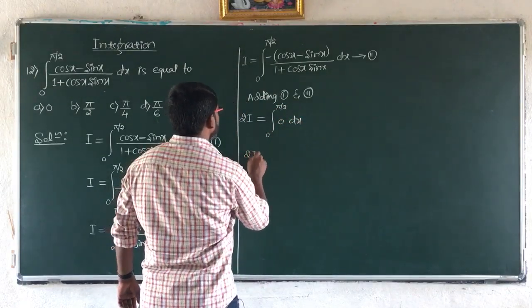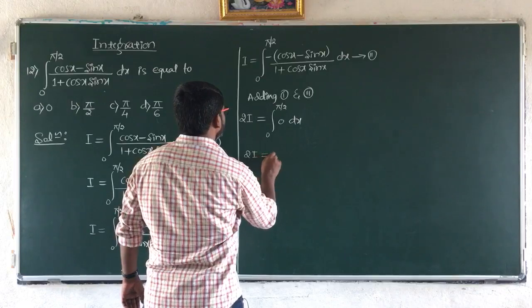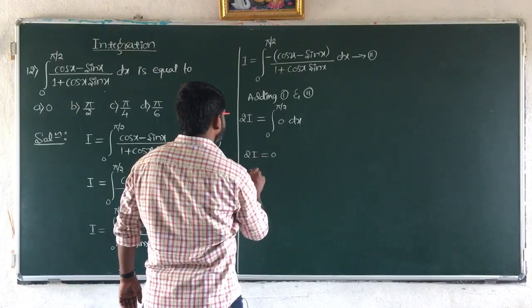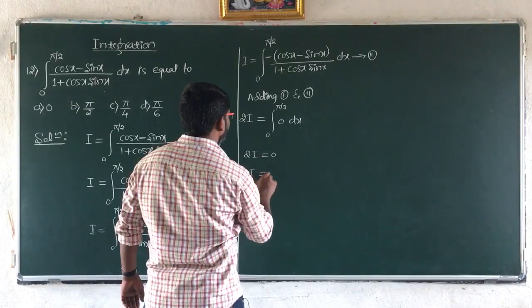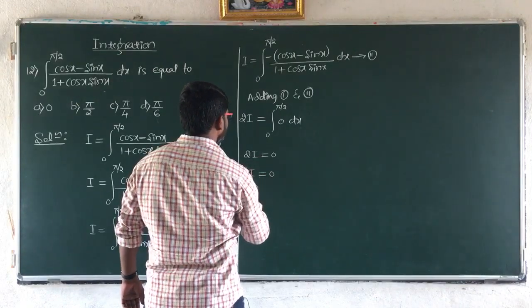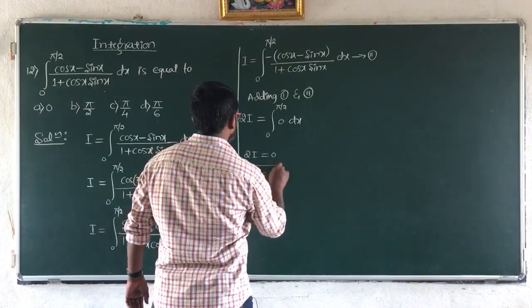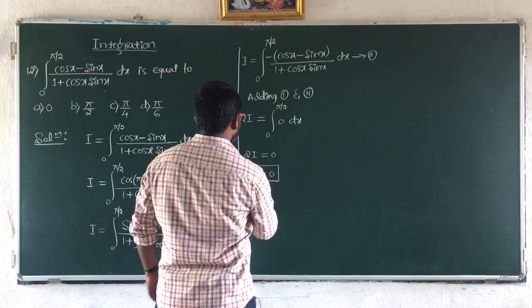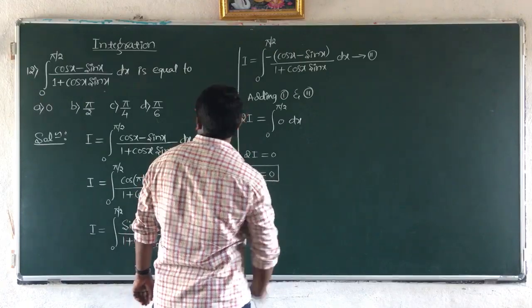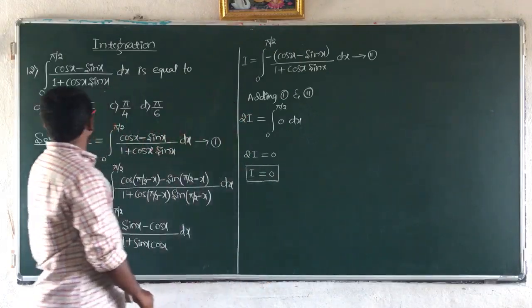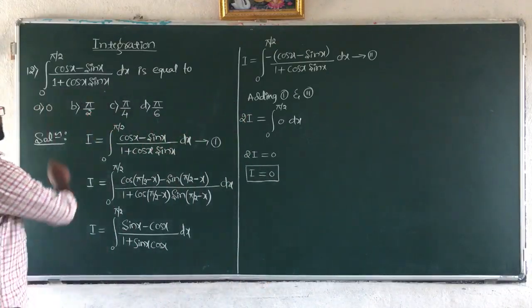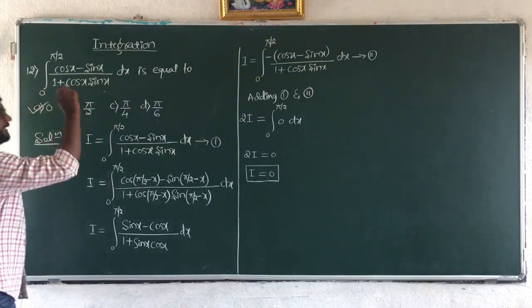So 2I equals 0, and I equals 0. Hence the answer is option A.